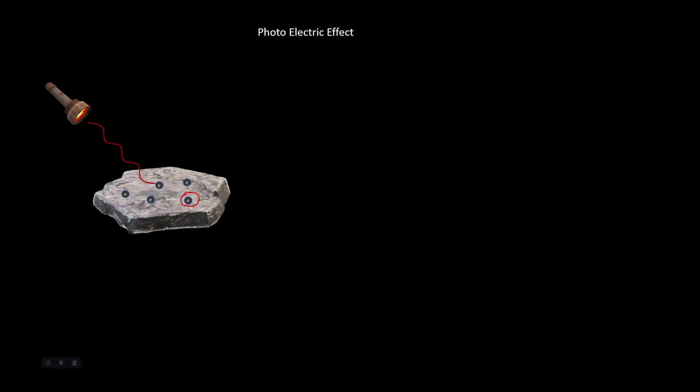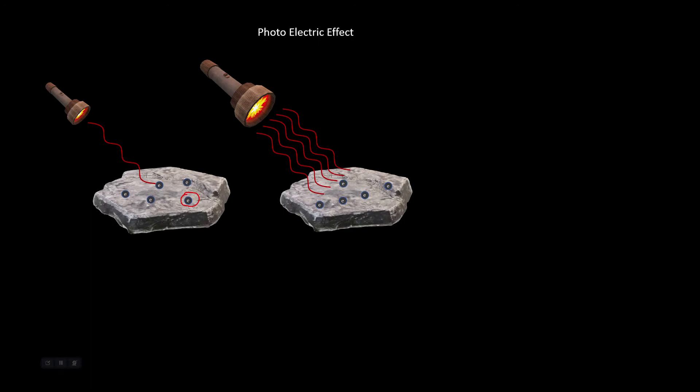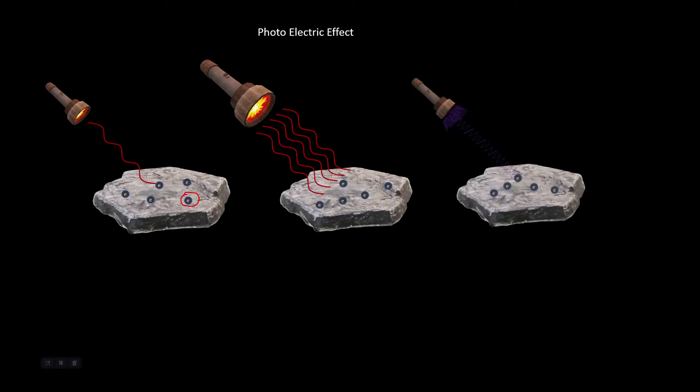If we increase the intensity of light—think of this as a brighter bulb but the same red light—we actually observe nothing. Now if we try again with the faintest UV light, which has much lower wavelength or higher frequency, we observe that electrons get ejected from the surface of the metal.